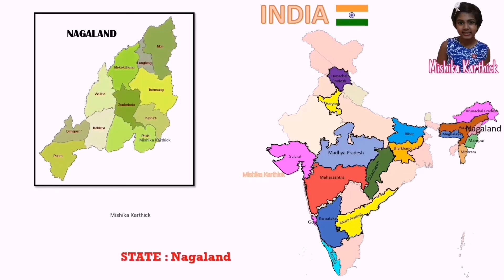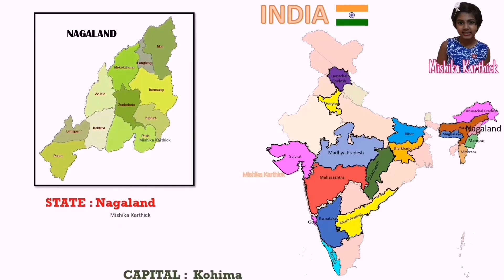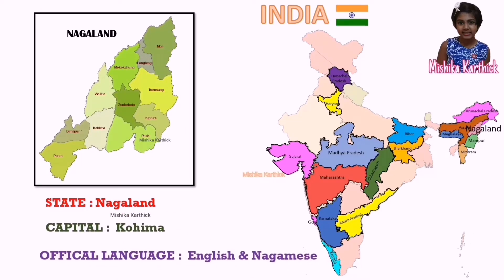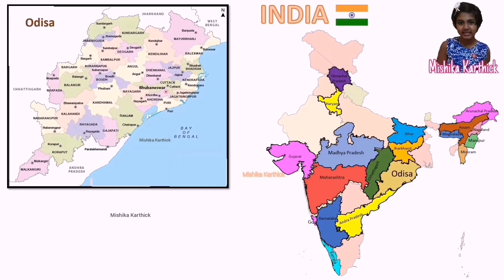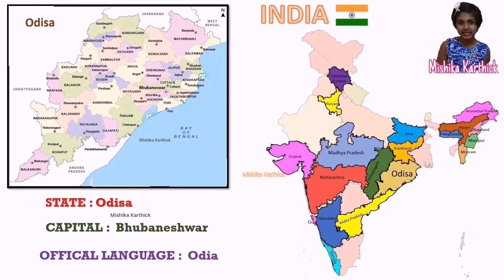Nagaland, capital Kohima, language English and Nagamese. Odisha, capital Bhubaneswar, language Odia.